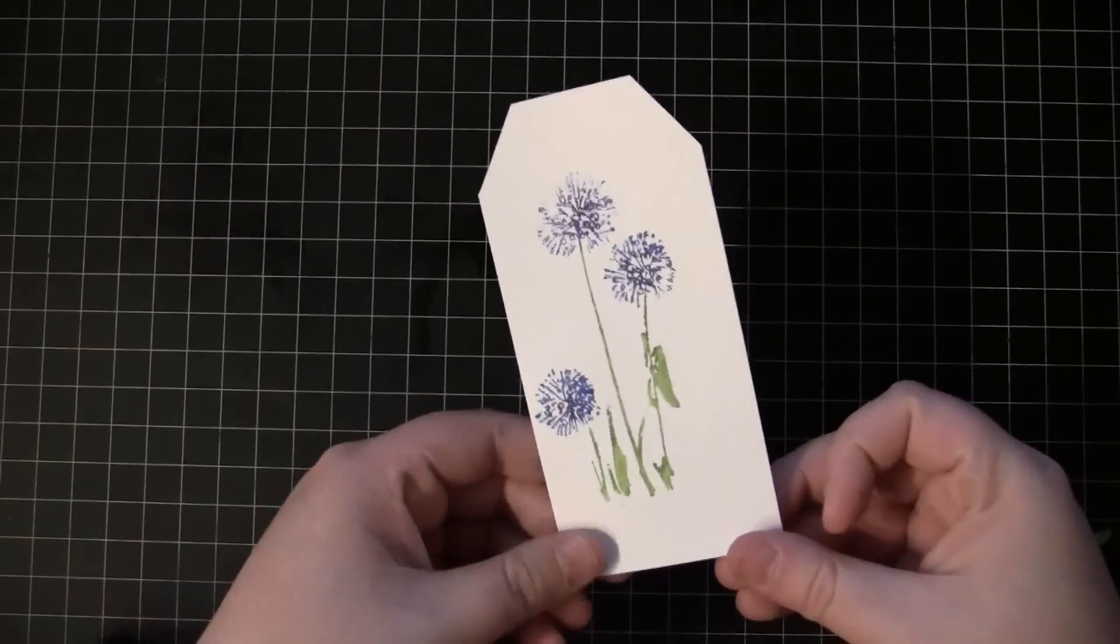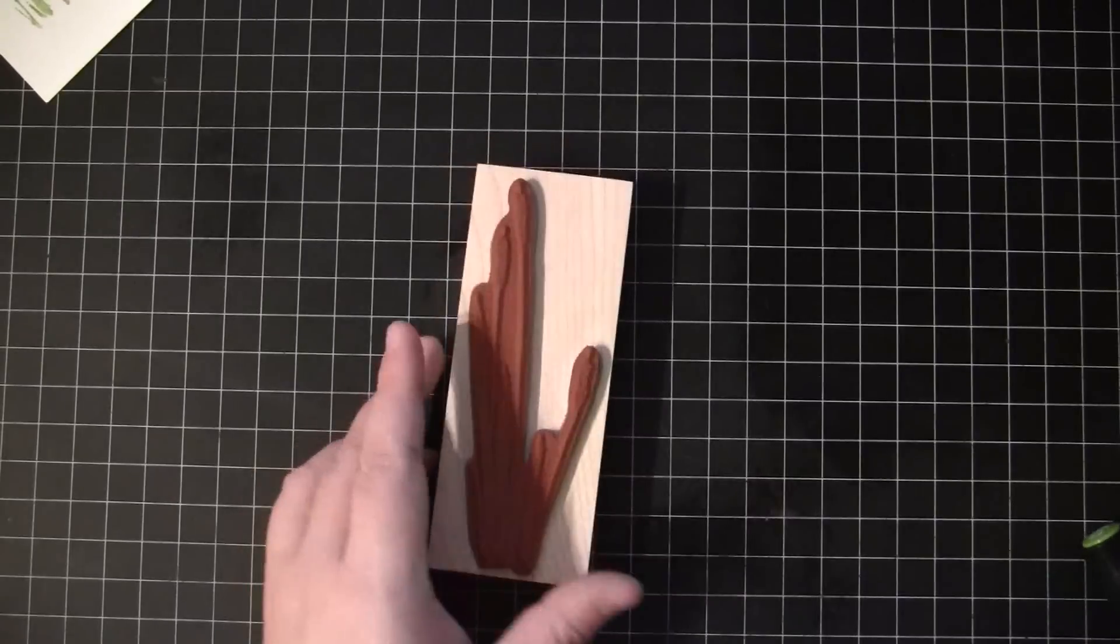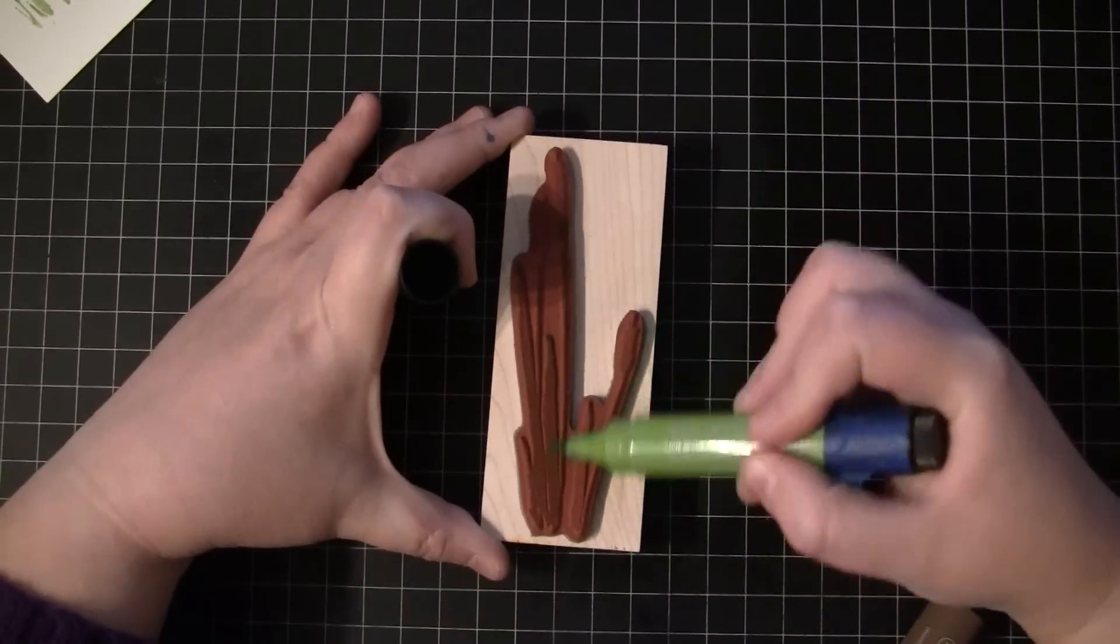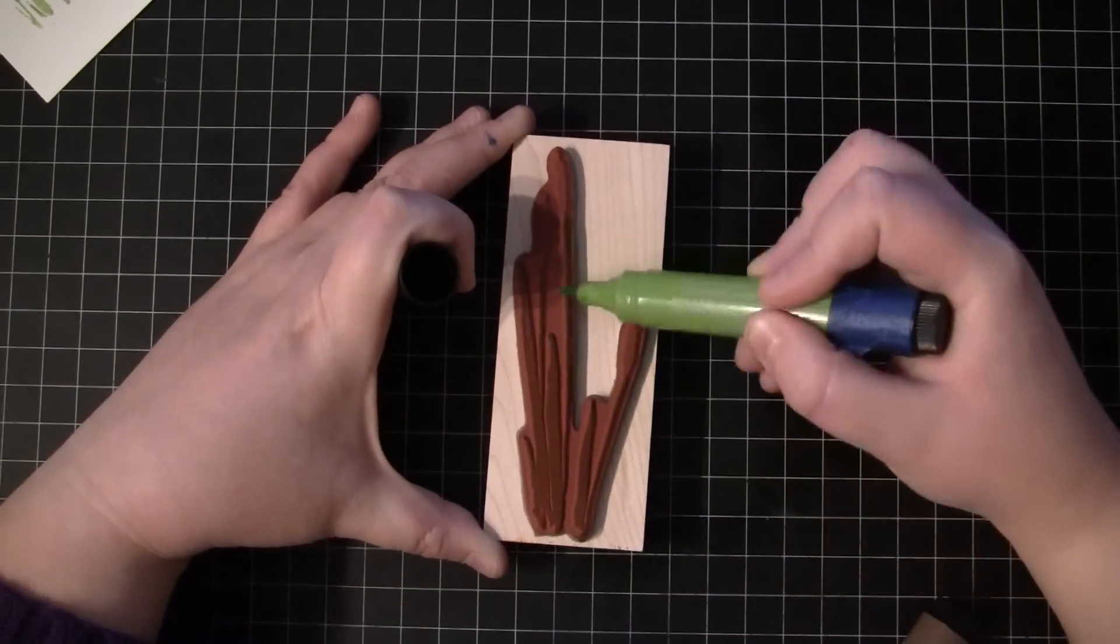And I love that you can kind of mix some of the colors. For example, on the flowers I used a couple of colors of blue and purple. And if you get any transfer onto your marker, just color it onto a scratch sheet until your nib color is clean.